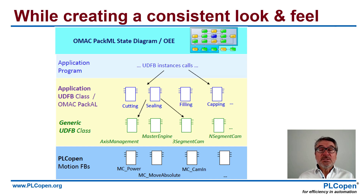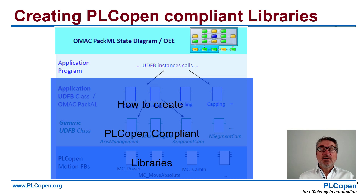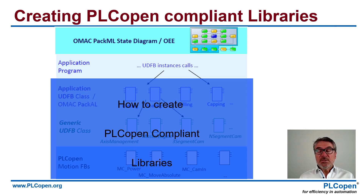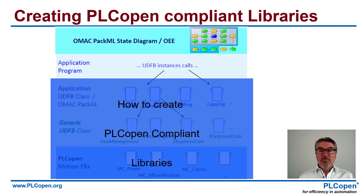The example here is based on the PackML state machine from OMAC, but it can be any other state machine — this is just to show you how it can look. The document 'How to Create PLC Open Compliant Libraries' deals with the lower three sections just under your application program. We advise you to use that part to create your own set of functional block libraries focused on your application areas and markets, and to make them available within your company.